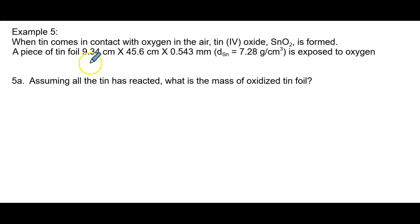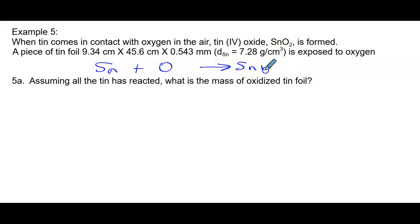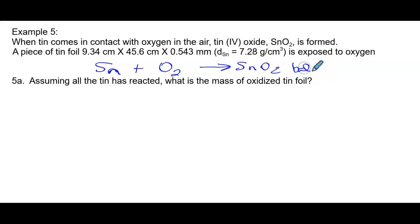It says tin comes in contact with oxygen — tin is Sn — plus oxygen, and it forms tin-4 oxide, already given as SnO₂. Tin is not diatomic, so it's just Sn. Oxygen is diatomic, so we get O₂. We need to balance it — it's already balanced. I'm going to indicate to myself that it's been balanced, and now I'm going to begin the problem.